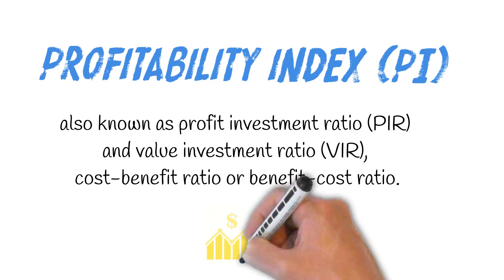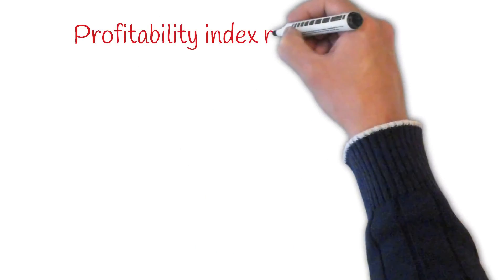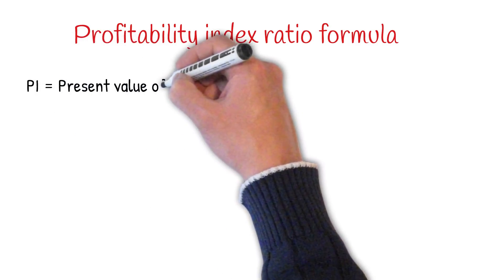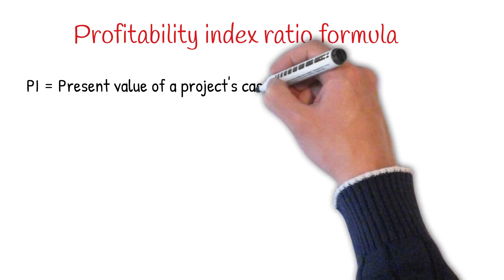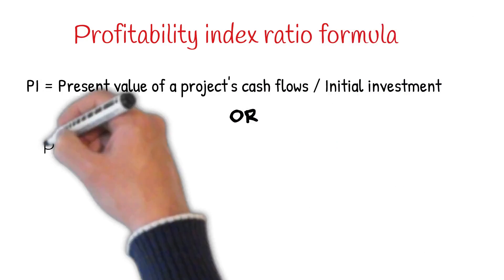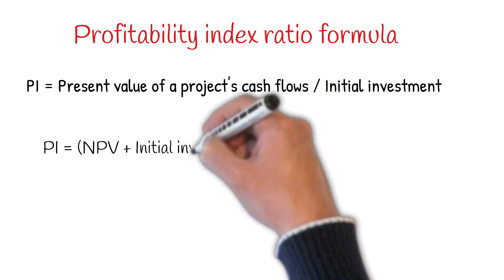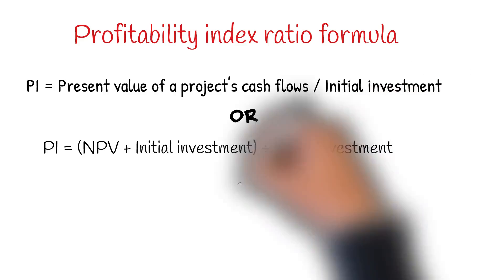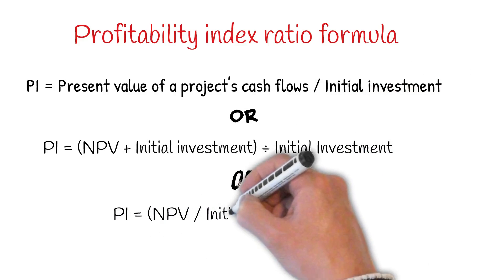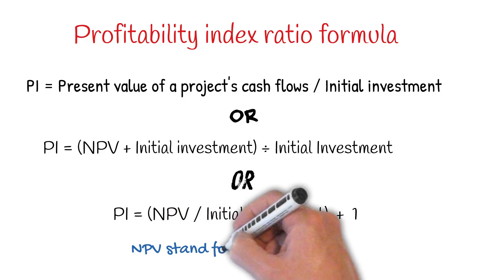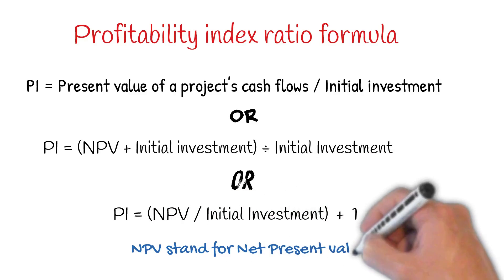Profitability Index uses time value of money concepts in its calculation. The Profitability Index ratio is calculated as the present value of future cash flows divided by the initial investment for the project. Different formulas are used for Profitability Index calculation, but the result of all formulas must be the same. You may use any one formula — selection of the formula depends on your requirement and available data of the project.